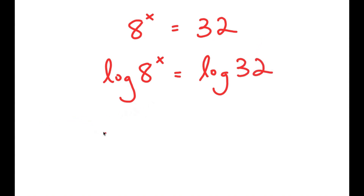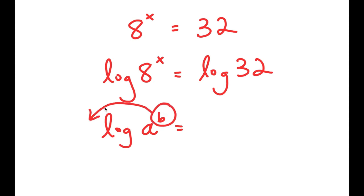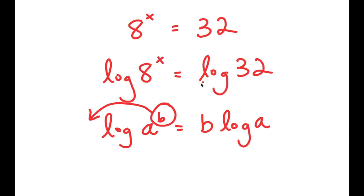Now, if I have something in the form log of a to the power of b, I can move the exponent b to the front of the logarithm. So this is turned into b times log a. So log a to the power of b is equal to b times log a. So in the case of log 8 to the power of x, we can think of x as b, and move x to the front of the logarithm.